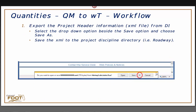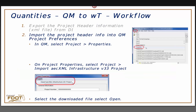Once I click to export, it's going to show up at the bottom of your browser window. Select the Save As option from the dropdown and save it to your project discipline directory. Once I have that header file, I need to import it into Quantity Manager, so I need to open up Quantity Manager and go to Project Properties. From the Project Properties dialog box at the very top, it will have an option to import AEC XML Infrastructure V33 project. Click that button and select the file.